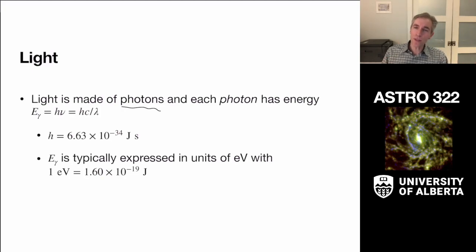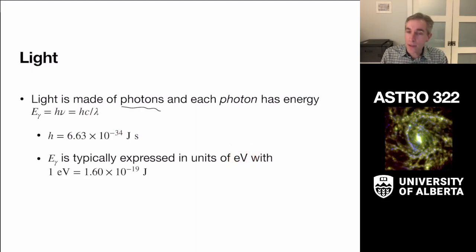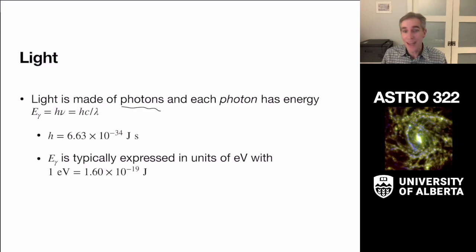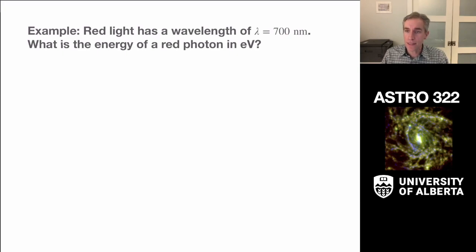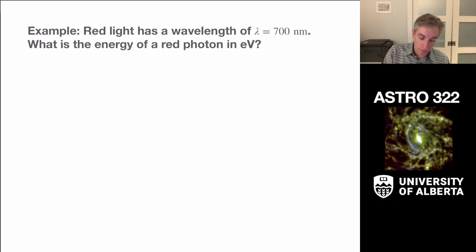It's really useful to think about the energy scales of light in terms of electron volts (eV), where 1 eV = 1.60×10⁻¹⁹ joules. This is useful because that's about the characteristic scale of energies that atoms undergo — electronic transitions that give us spectral lines typically have characteristic energies of electron volts. We can apply this to find the energy of a single red photon at 700 nm.